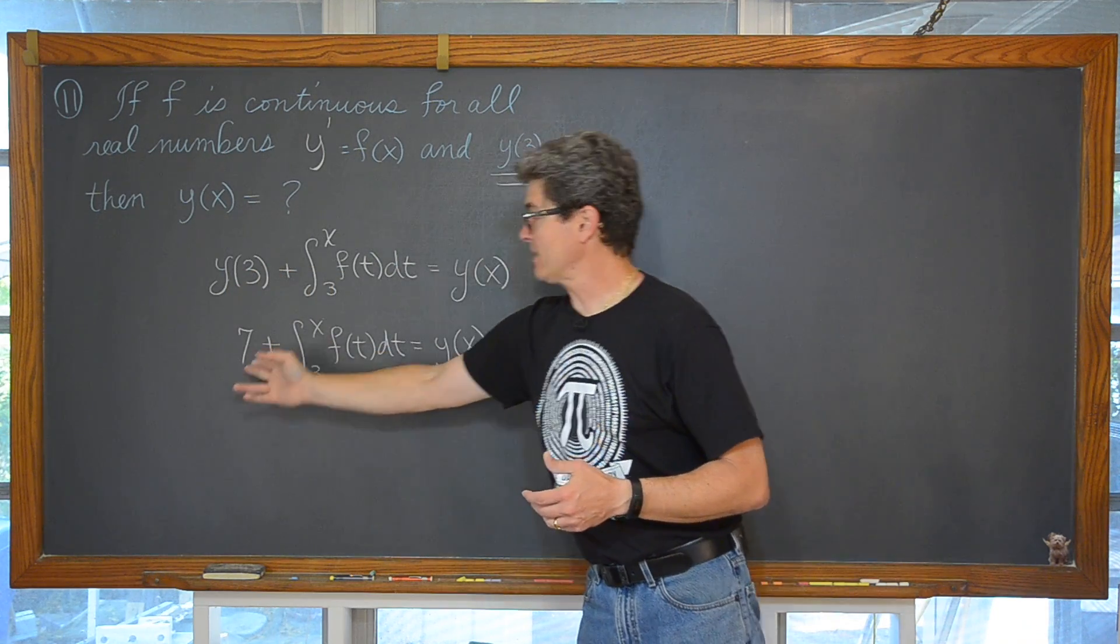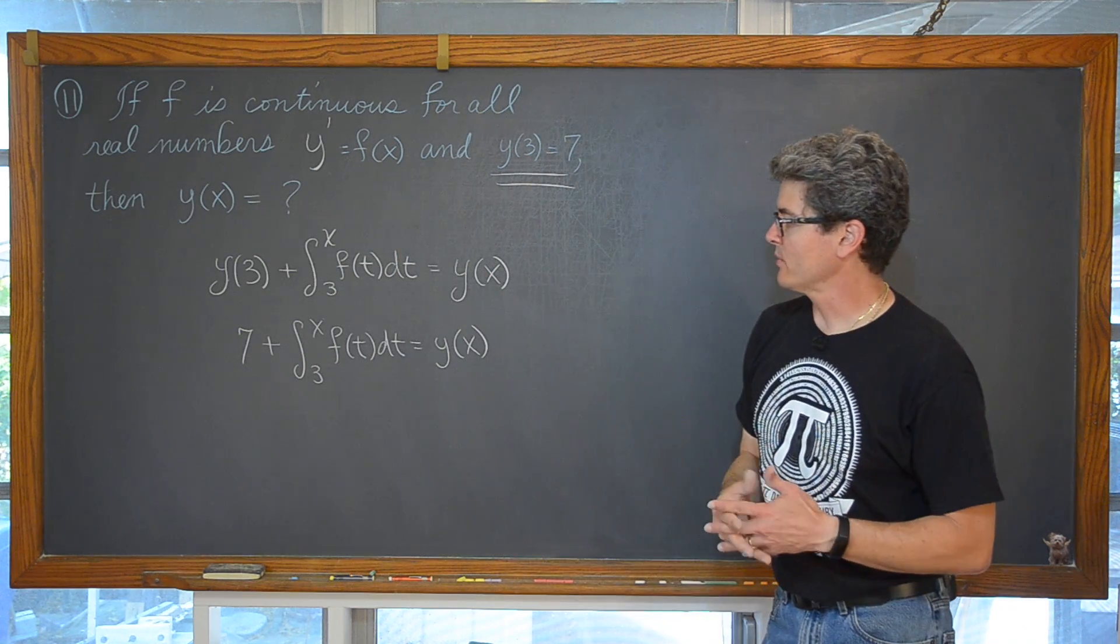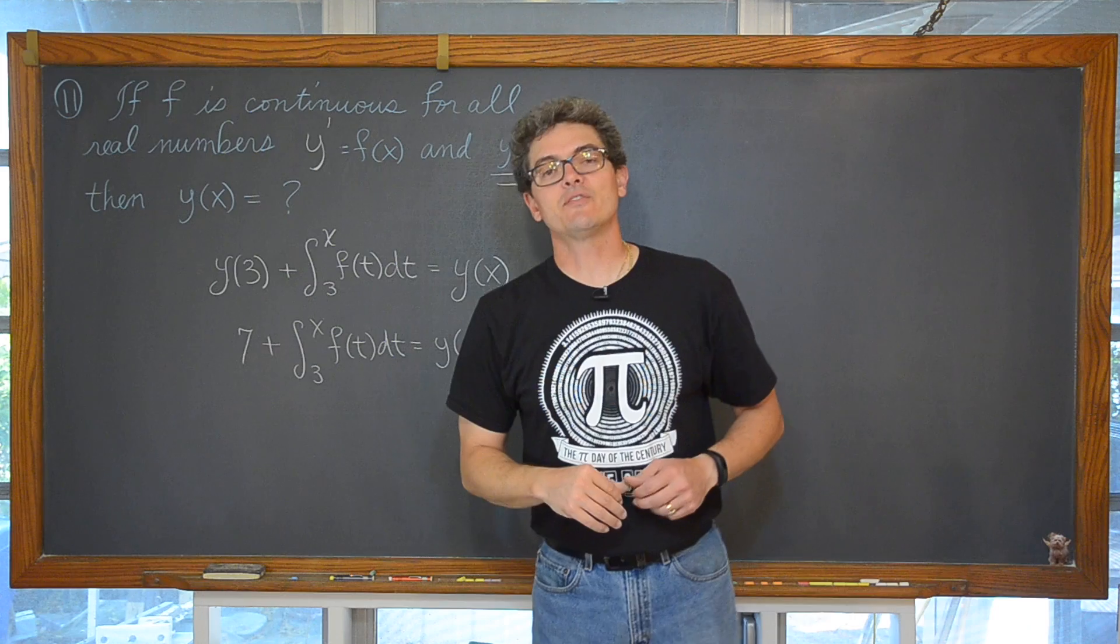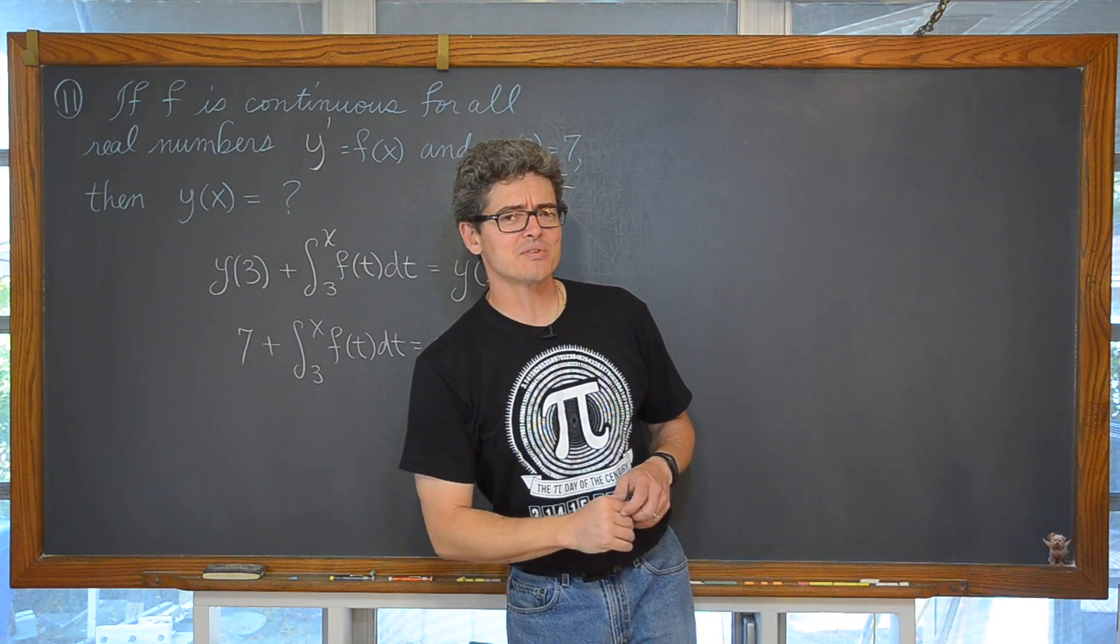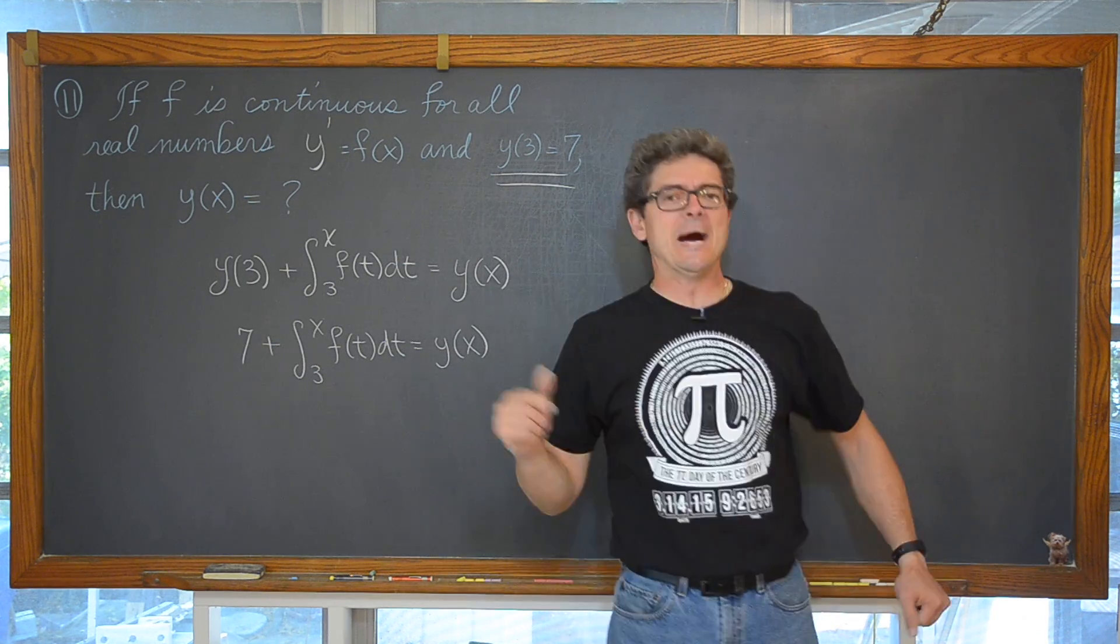So we have y of 3 getting replaced with 7. 7 plus the definite integral from 3 to x of f of t dt is equal to y of x. And that is the end of our third example for this particular video, the eleventh example in our series getting ready for the AP Calculus Exam. Getting that 5 like BAM!